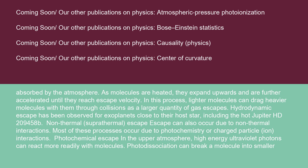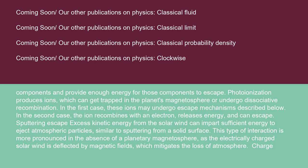Escape can also occur due to non-thermal interactions. Most of these processes occur due to photochemistry or charged particle-ion interactions. In the upper atmosphere, high-energy ultraviolet photons can react more readily with molecules. Photodissociation can break a molecule into smaller components and provide enough energy for those components to escape. Photo-ionization produces ions, which can get trapped in the planet's magnetosphere or undergo dissociative recombination. In the first case, these ions may undergo escape mechanisms described below. In the second case, the ion recombines with an electron, releases energy, and can escape.